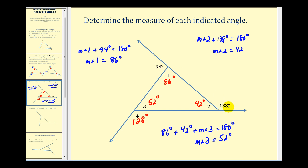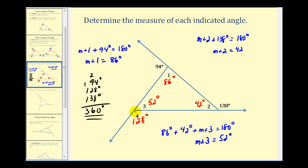Let's sum the exterior angles of this triangle: 94 degrees, 128 degrees, and 138 degrees — that totals 360 degrees. Notice the interior and exterior angles form three linear pairs, so three times 180 degrees is 540 degrees. If we then subtract out the sum of the interior angles, which is always 180 degrees, we get 360 degrees — which matches the sum of our exterior angles. We'll come back to this idea later in the video.